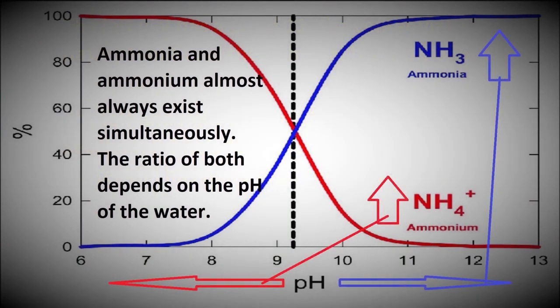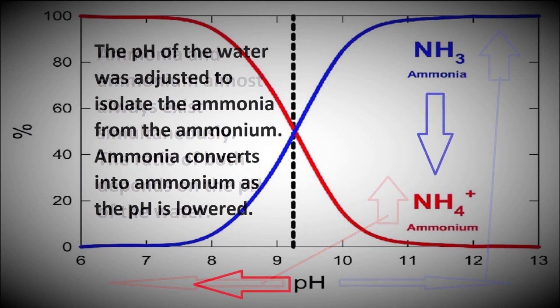Ammonia and ammonium almost always exist simultaneously. The ratio of both depends on the pH of the water. As shown on this chart, the lower the pH, the higher the ammonium content, and the higher the pH, the higher the ammonia content. The pH of the water was adjusted to isolate the ammonia from the ammonium, as ammonia converts into ammonium as the pH is lowered.